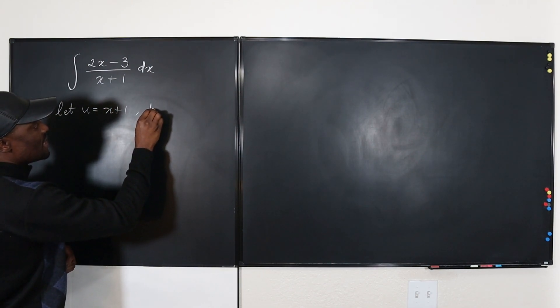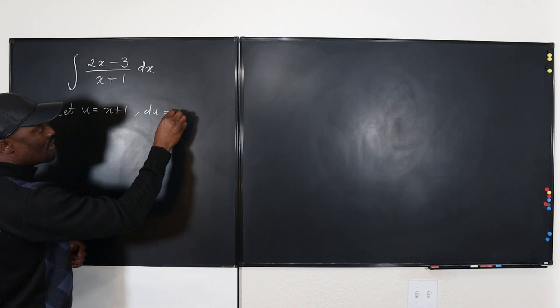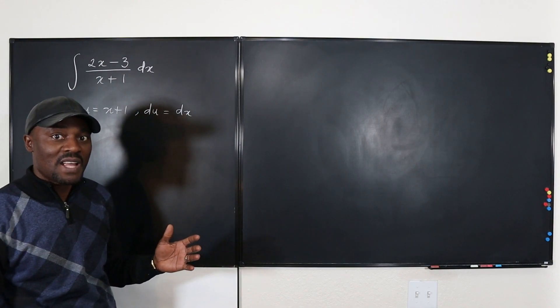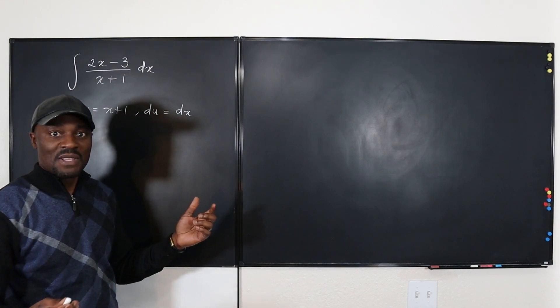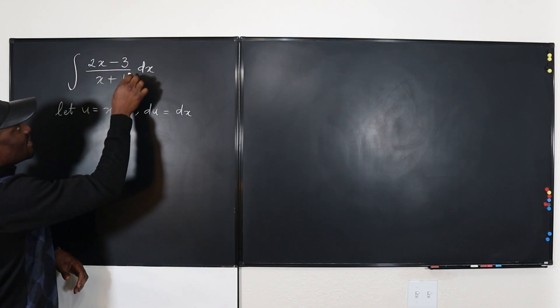That tells me immediately that DU equals, if I differentiate this, it's going to be just 1, so it's going to be 1 DX. So there's no need to do anything fancy. My DU is the same thing as my DX.